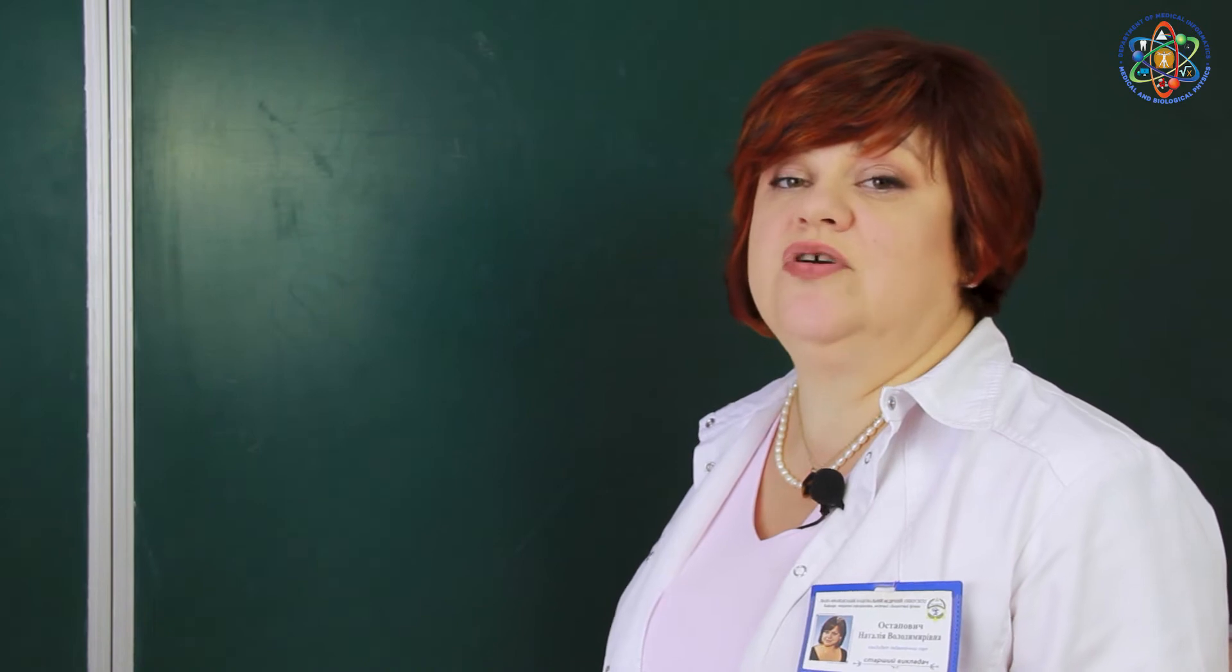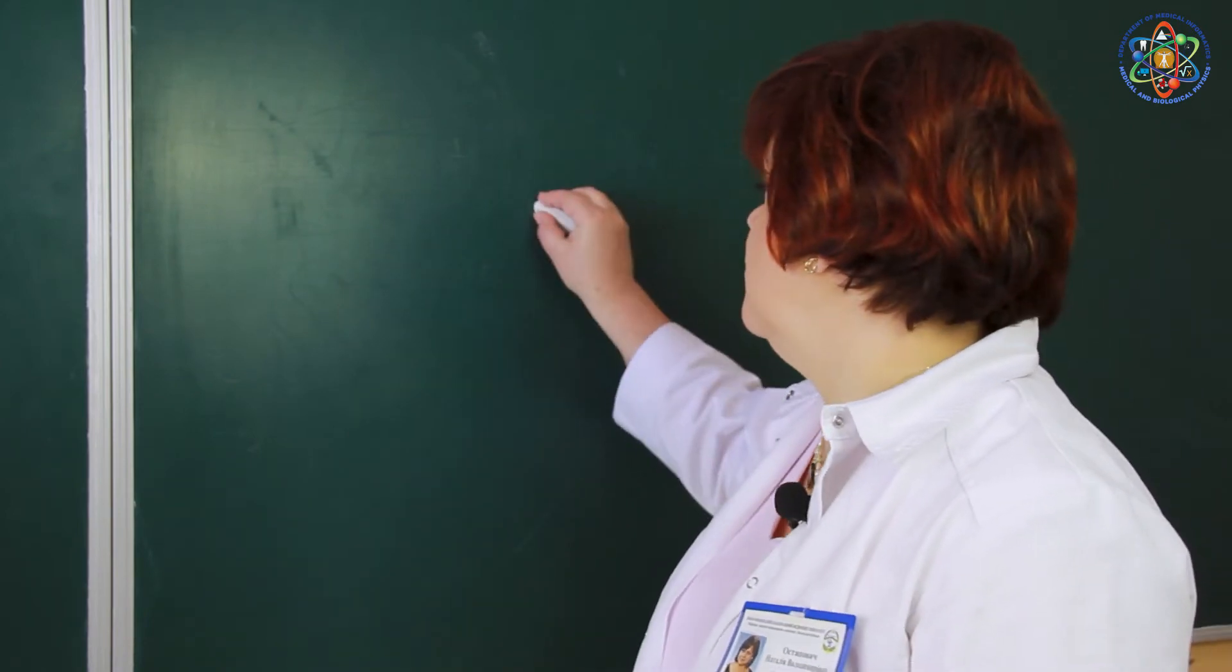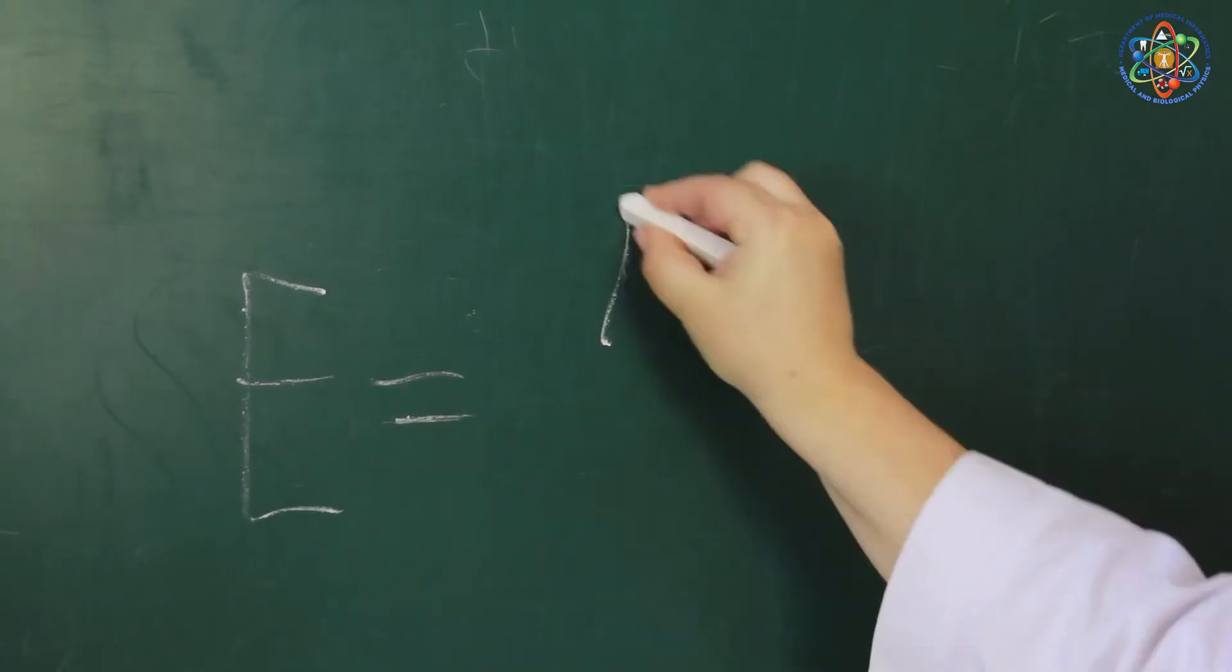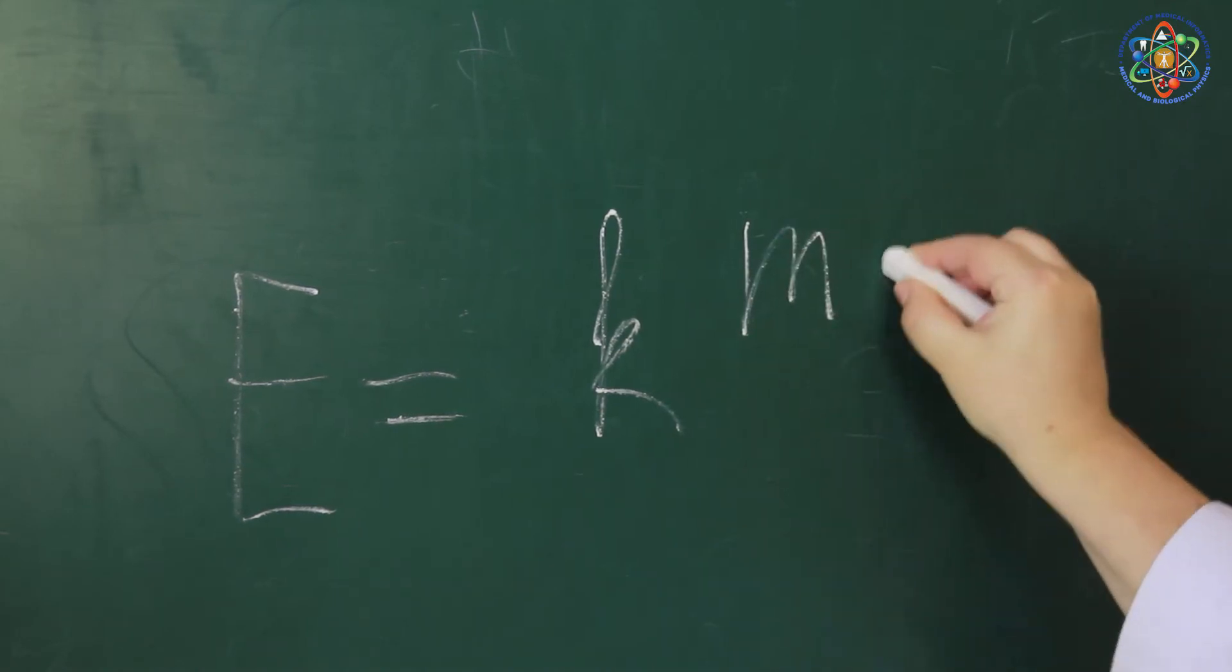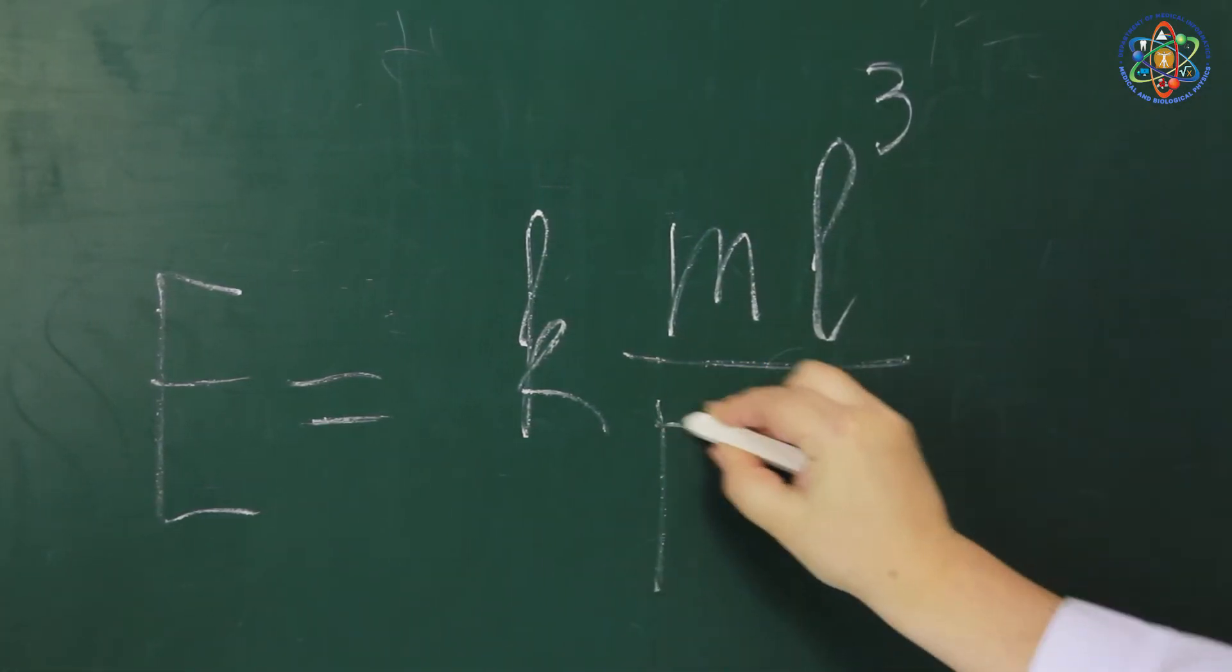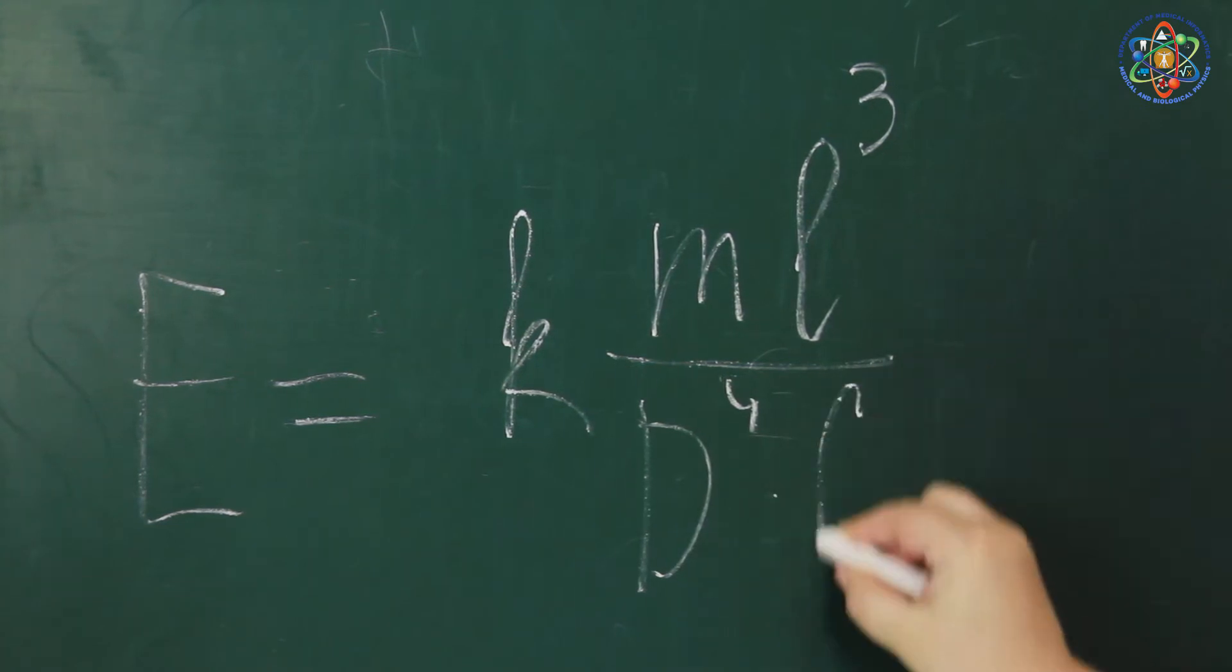The Young's modulus of the bone tissue is measured according to the following formula. E equals K times M times L to the third power divided by D to the fourth power times F.